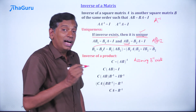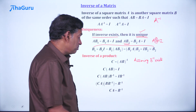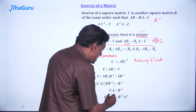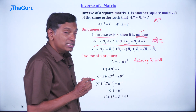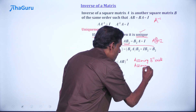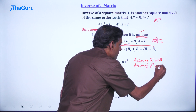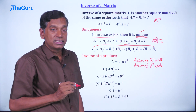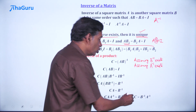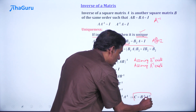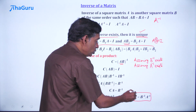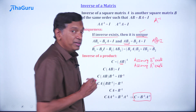Now we can multiply both sides on the right by A inverse — assuming A inverse exists. So CA times A inverse equals B inverse times A inverse. Since AA inverse is I, we get C equals B inverse A inverse. That means if you take AB and find its inverse, you get B inverse A inverse — the product of the inverses in reverse order.